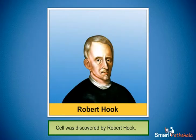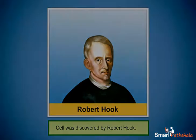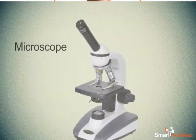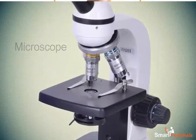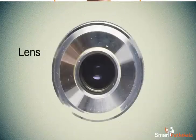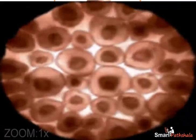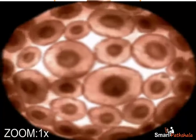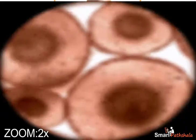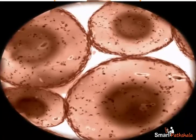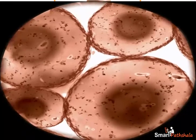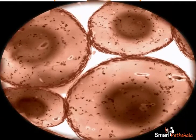Cell was discovered by Robert Hooke in 1665. While observing the thin slices of cork under a magnifying device, he found several partitioned boxes or compartments. These boxes appeared like a honeycomb, in which one box is separated from the other by a wall.